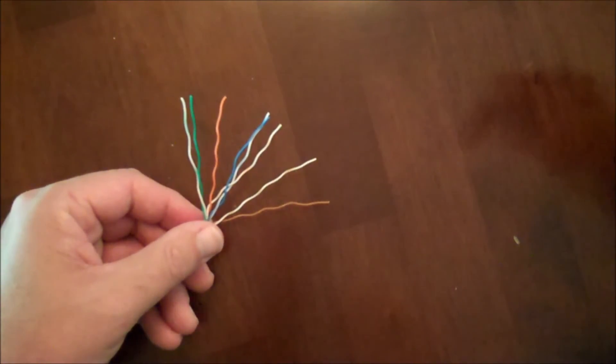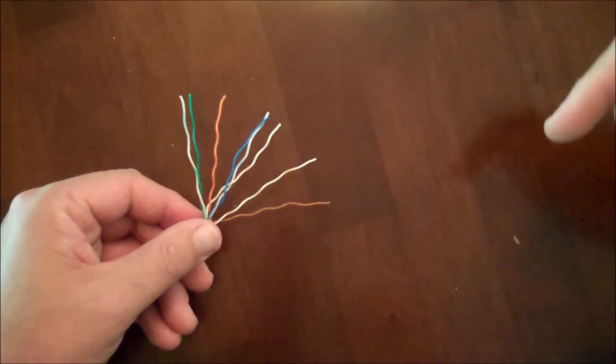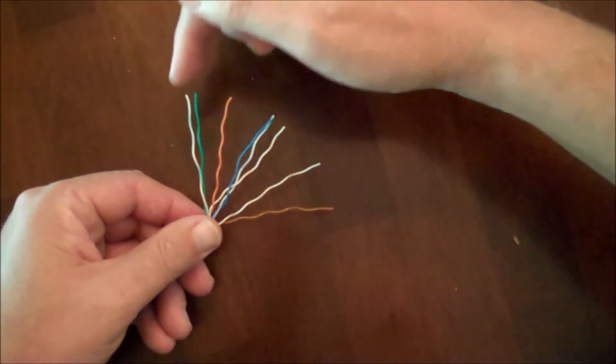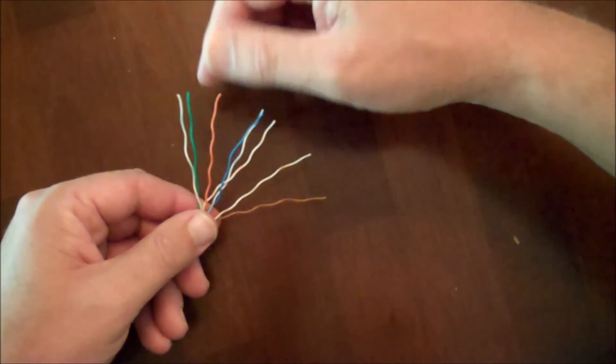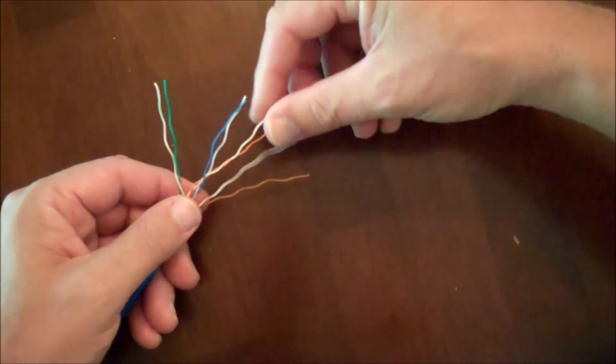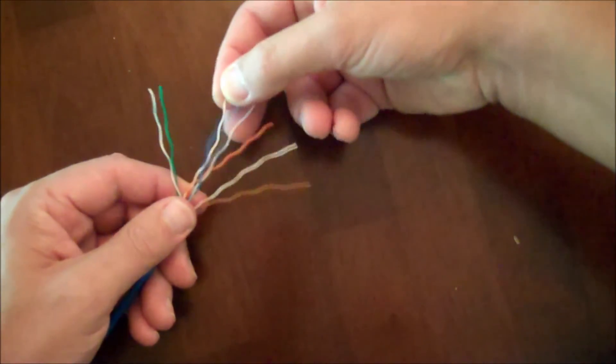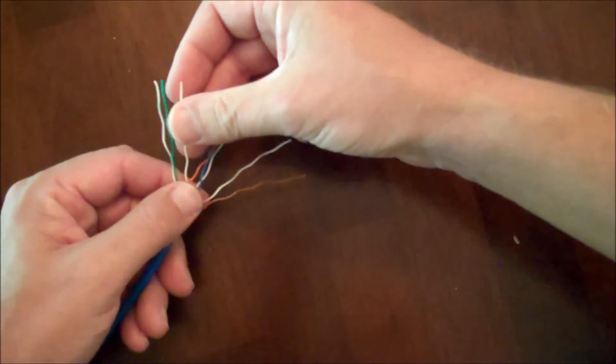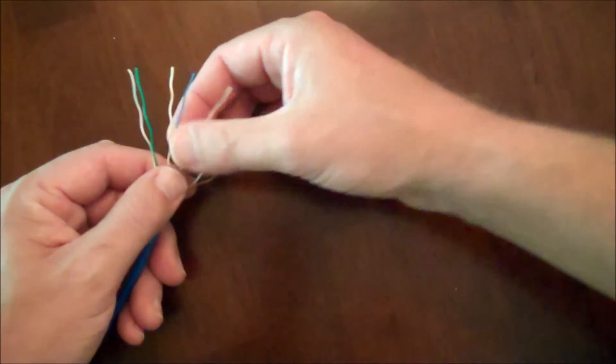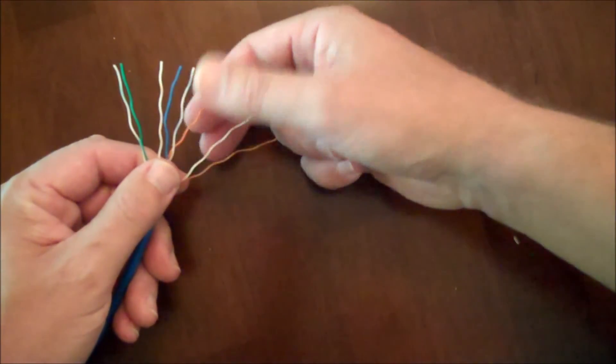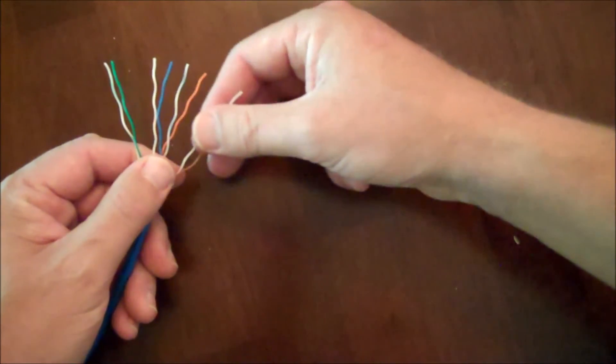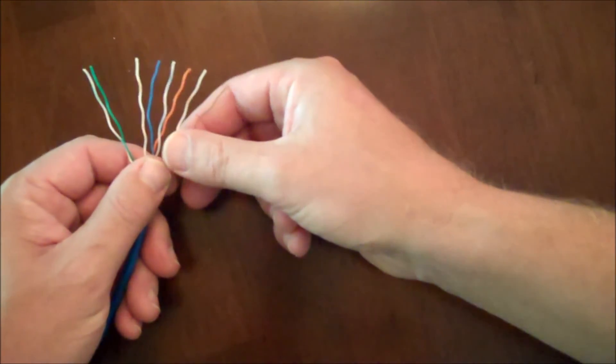Next thing we want to do is put the wires into the correct order. Starting from left to right, we have the green white green, followed by the green. Then we're going to move that solid orange over there and bring the orange white orange over, followed by the blue, and then the blue white blue, followed by the solid orange, then the brown white brown, followed by the brown.